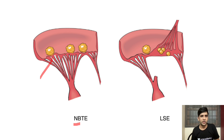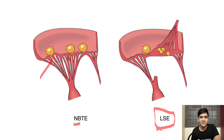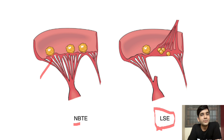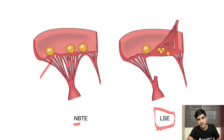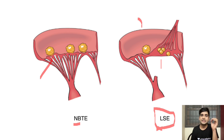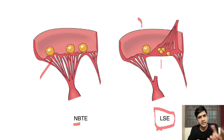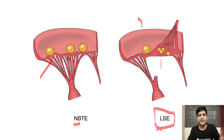The last type is Libman-Sachs endocarditis. If you look at the abbreviation LSE, it looks like SLE — and indeed it is seen in SLE. The unique thing about this vegetation is that it can be seen on both sides of the valve leaflet. Vegetation on both sides of the valve leaflet is diagnostic of Libman-Sachs endocarditis. They are also small. Since they are SLE-related, they are made of immune complexes, not bacteria — again, sterile. As I said, the only infective vegetations are infective endocarditis.